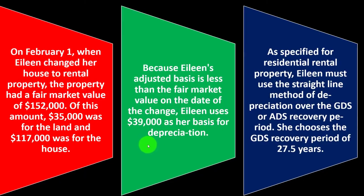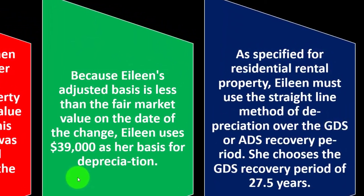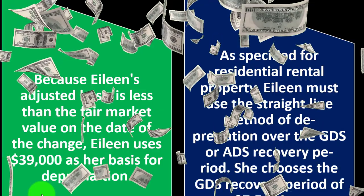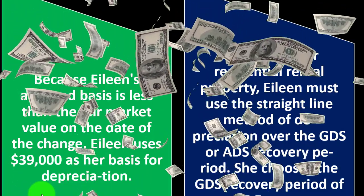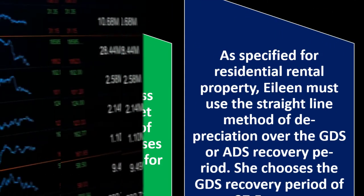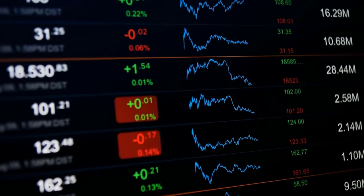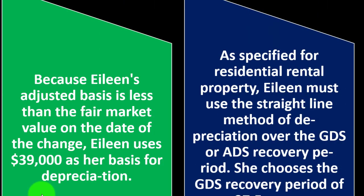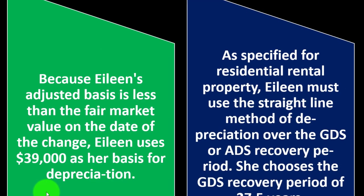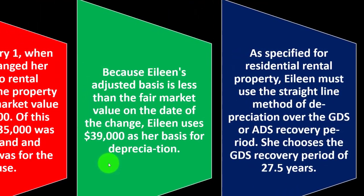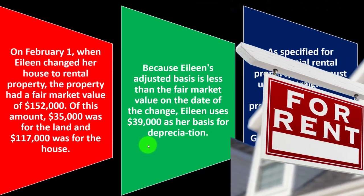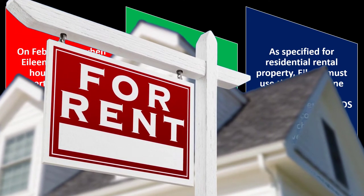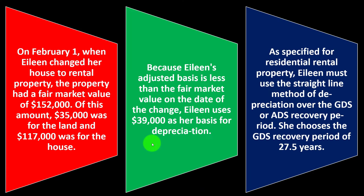Note that using the lesser of the values could have been worse — the IRS could have required recognizing a gain and paying taxes on it at the point of conversion. By taking the lesser of adjusted basis versus fair market value, you don't pay tax on the appreciation until you realize it. Instead, they keep the lower basis so you'll recognize the gain when you sell it and won't benefit from depreciation on the stepped-up value.